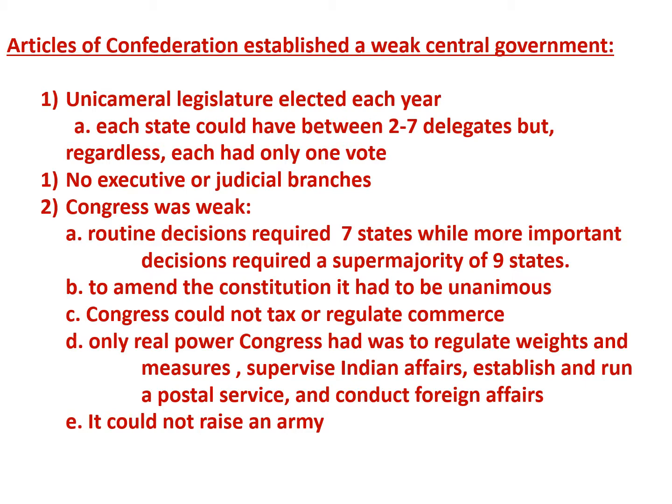Congress itself was weak. Routine decisions required a majority of seven states, but more important decisions required a supermajority of nine states. To amend the Articles themselves, the amendment had to be unanimous — one state could therefore hold the rest hostage. Congress couldn't tax. The idea was that each state would contribute money to the federal government according to the relative value of its land, but there was no provision that states would actually provide money. This meant the federal government had no revenue except for asking the states — they couldn't impose a tariff or provide taxes at all. Requests for funds were almost uniformly turned down by the state governments.